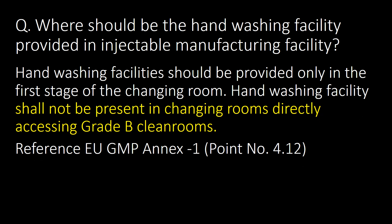Where should handwashing facilities be provided in an injectable manufacturing facility? Handwashing facilities should be provided only in the first stage of the changing room. Handwashing facilities shall not be present in changing rooms directly accessing Grade B clean rooms. Reference: EU GMP Annex 1, Point No. 4.12.